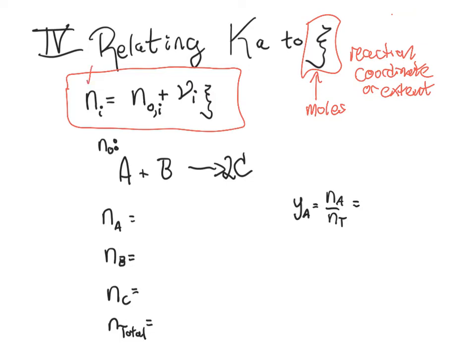So the number of moles at, as the number of moles of I as the reaction proceeds is equal to the number of moles you started out with times ξ times the stoichiometric coefficient. So let's do a super quick little example to remind us of this.